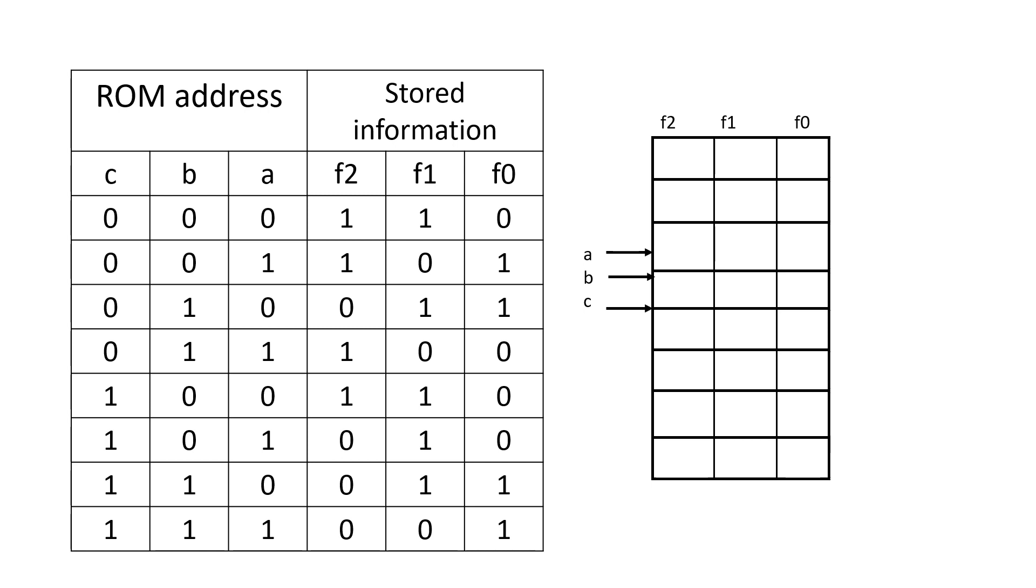That is the rule you have to follow and when there is no minterm present, data line bit should be made equal to 0. So, the values of ABC, suppose if ABC is equal to 0, 1, 1, which means minterm M3. That time F2 should be equal to 1 because if you go to the previous slide and see that F2 is a function of minterm M3. Whereas, M3 is missing in F0 and F1. So, in that memory location, when the address bits are 0, 1, 1, you will store information as 1, 0, 0.